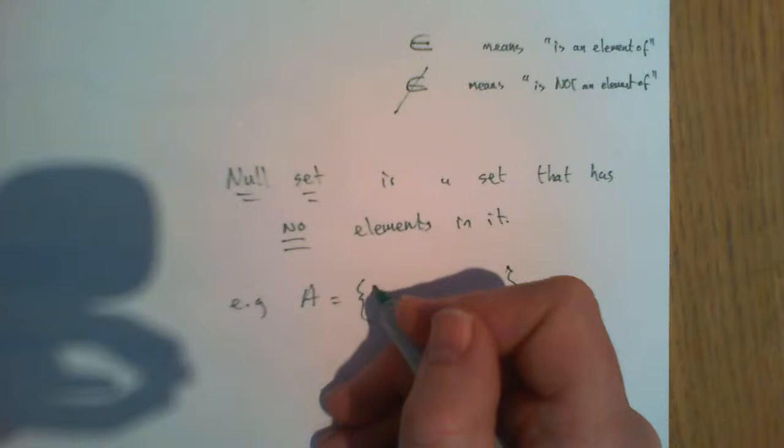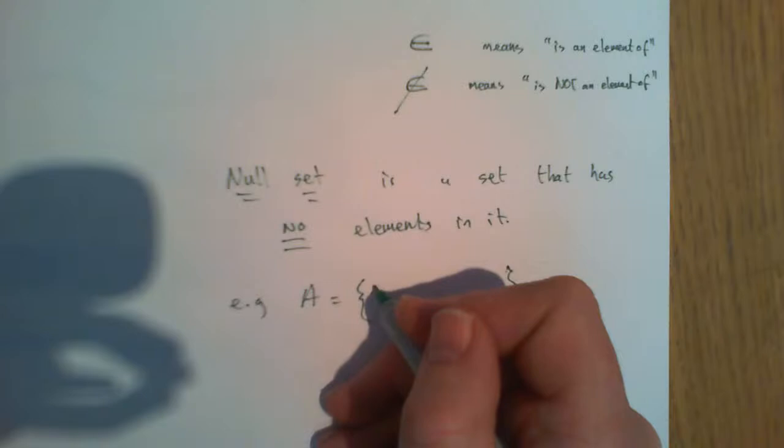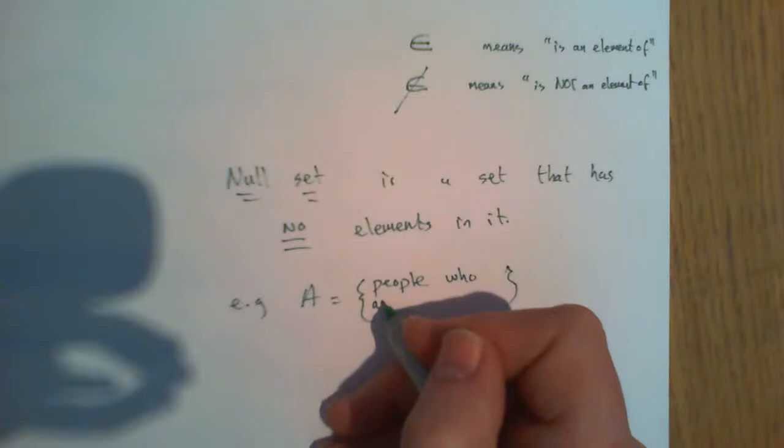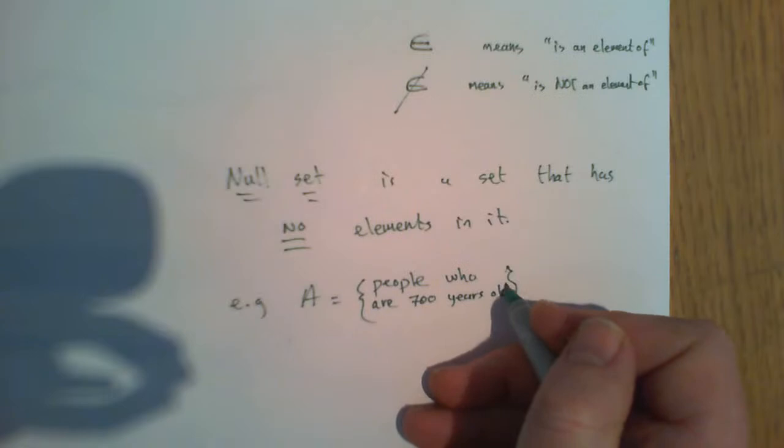...then that is a null set, because as far as I'm aware there is nobody on this planet who is 700 years old.